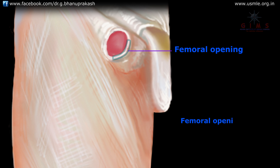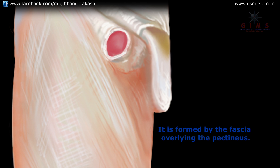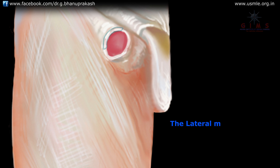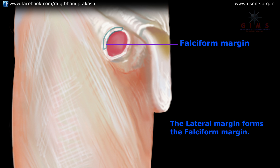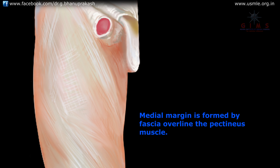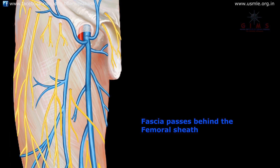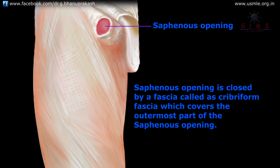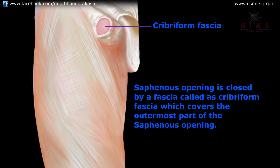The medial margin of the saphenous opening lies at a deeper level compared to the lateral margin, and is formed by the fascia overlying the pectineus muscle. The lateral margin forms the falciform margin. This fascia passes behind the femoral sheath. The saphenous opening is closed by a fascia called the cribriform fascia, which covers the outermost part of the saphenous opening.